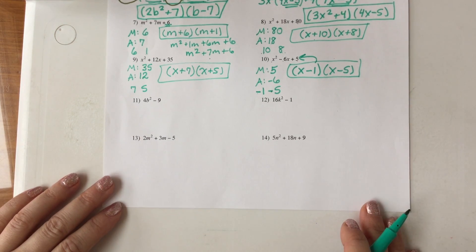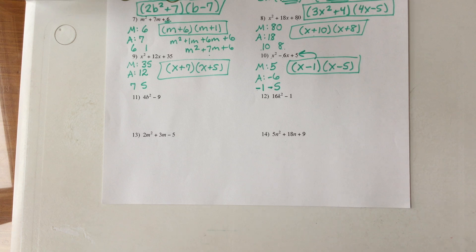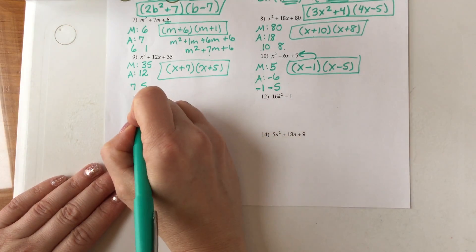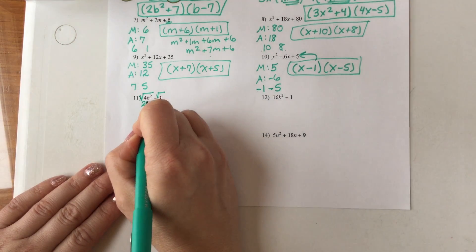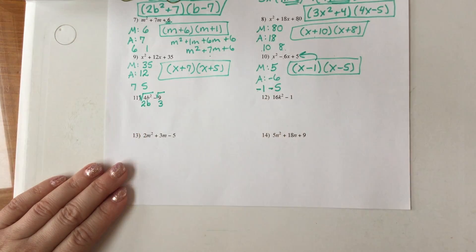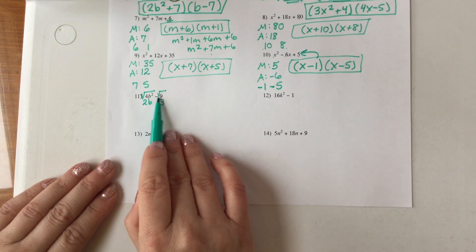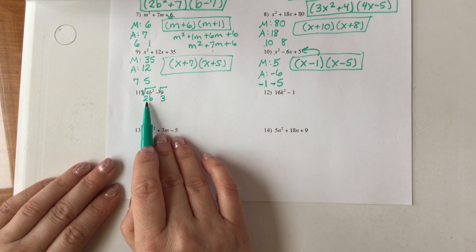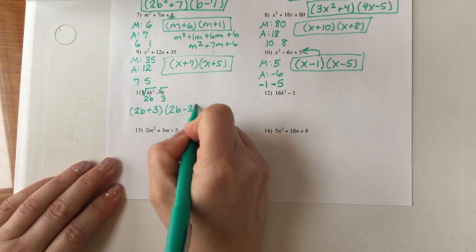The next one is one of my favorite methods — it's called the difference of squares. This method occurs when you have two terms with a minus sign in between. What you do is take the square root of the first term and the square root of the second term. For 4b² minus 9: square root of 4b² is 2b, square root of 9 is 3. Then you take those two results and write them as one binomial with addition and one with subtraction: (2b + 3)(2b - 3). Done.